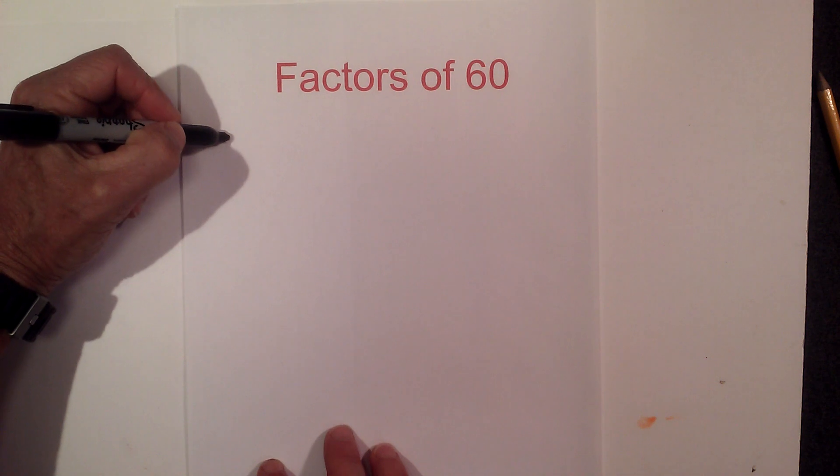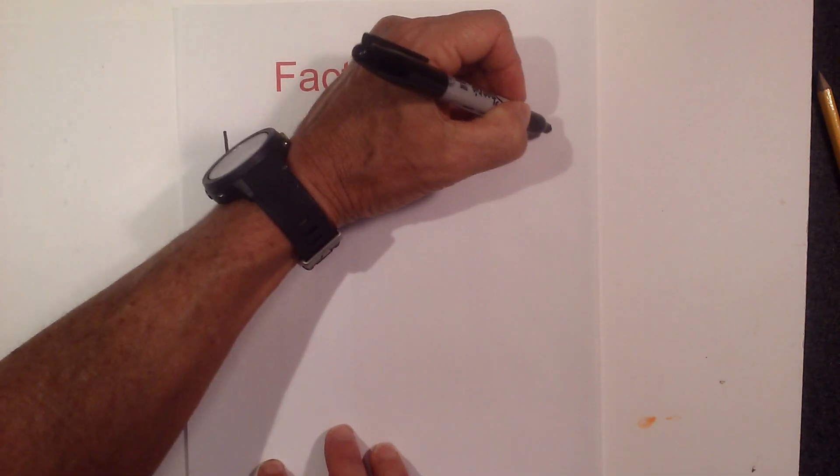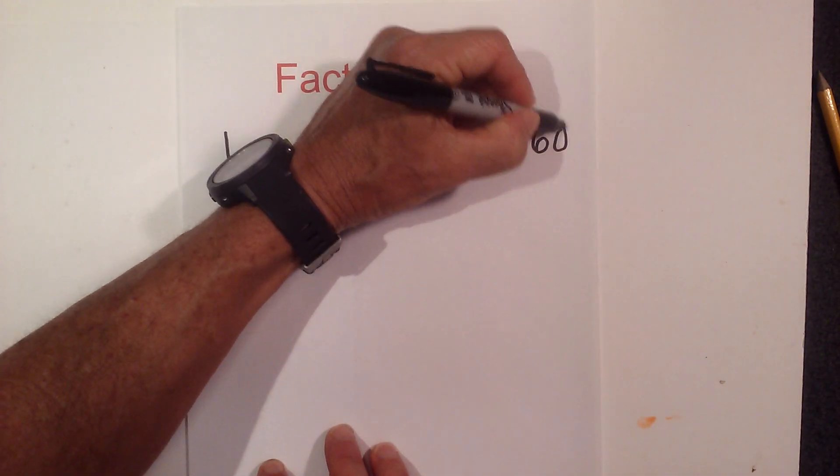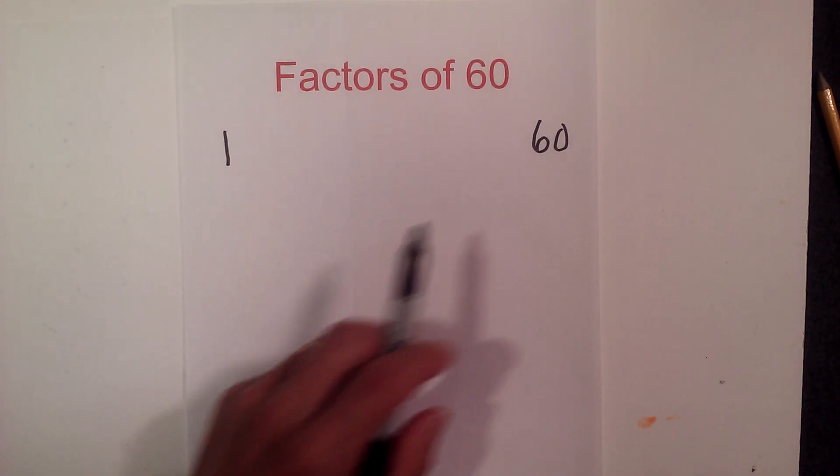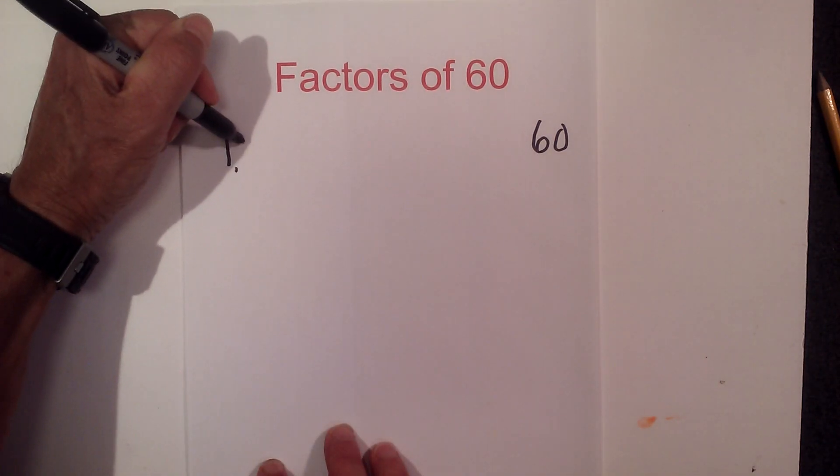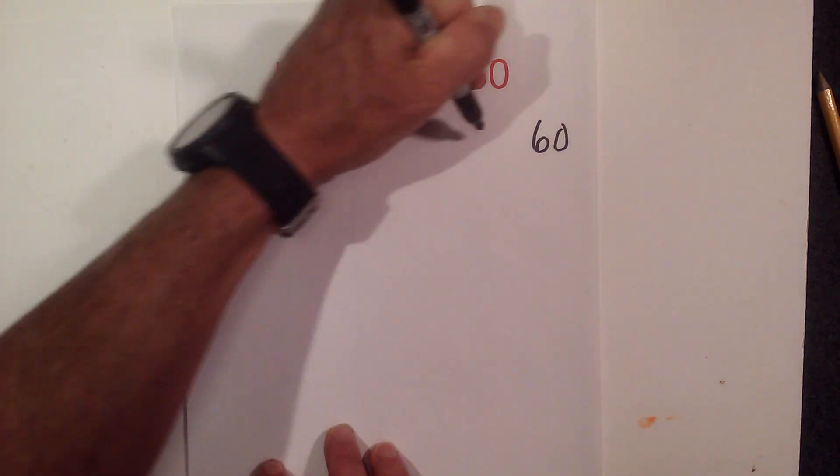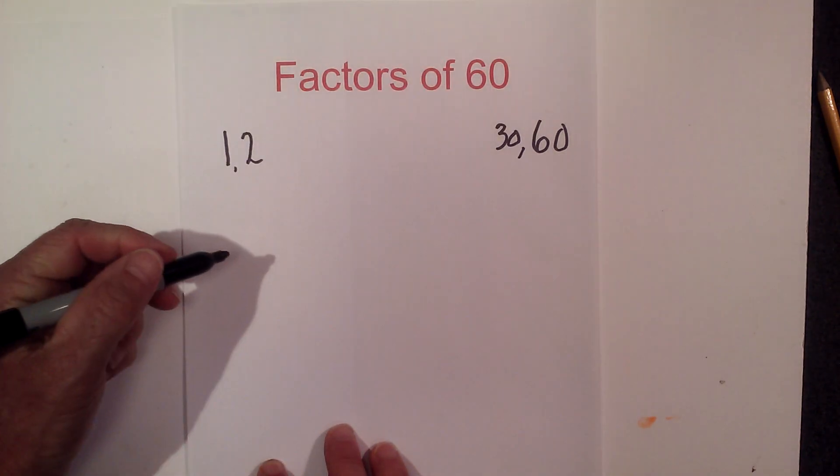Okay, first, the way I like to find factors is first start with 1 times 60, and then find all the numbers in between that divide together to equal 60. I know that 2 goes into 60 30 times.